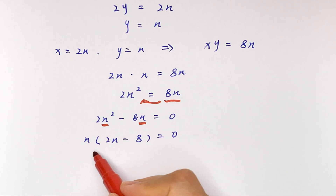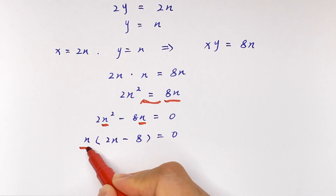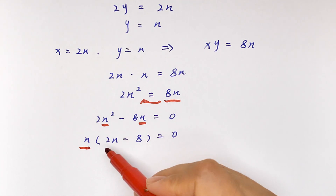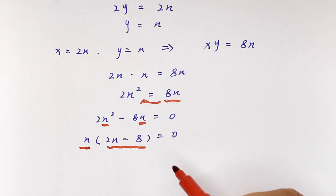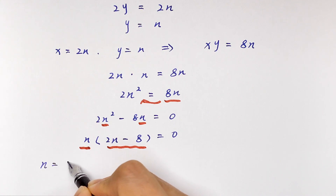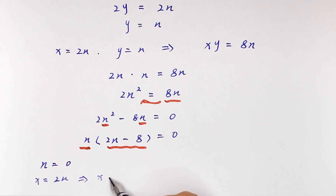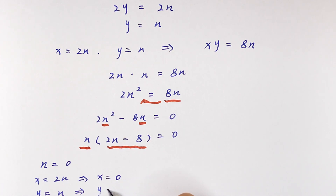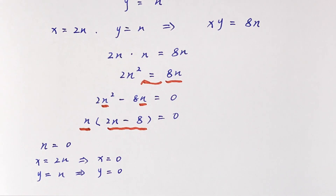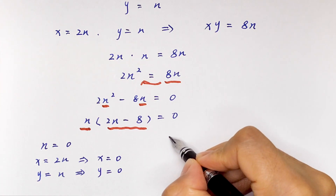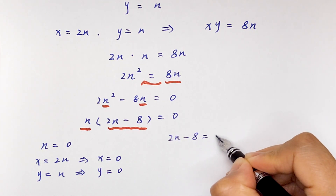Now we have two solutions. First, n is equal to 0, and the other solution is 2n minus 8 is equal to 0. For the first solution, n is equal to 0: since x is equal to 2n, x is equal to 0; and y is equal to n, so y is equal to 0.